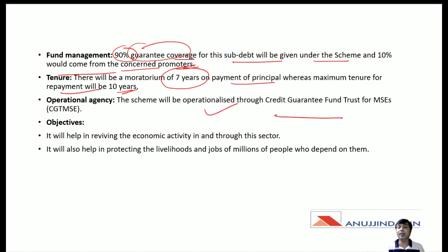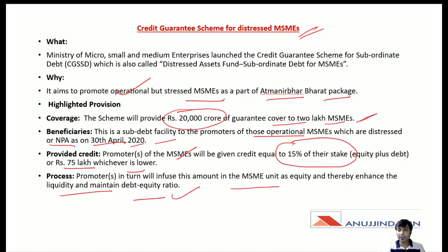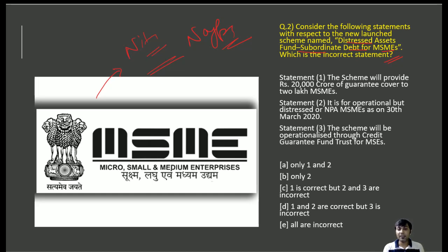The scheme will be operationalized through the Credit Guarantee Fund Trust for MSMEs. Its objectives are to help revive economic activity in and through this sector and to protect the livelihoods and jobs of millions of people. Statement 2 is incorrect — it says 30th March 2020, but the correct date is 30th April 2020. Therefore, the correct answer is Option B.